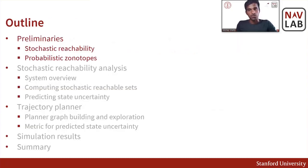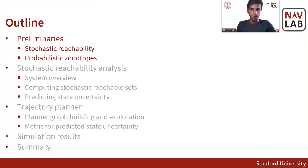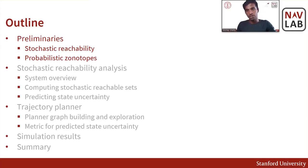Here is the outline for the rest of the talk. First, I'll provide a brief idea of stochastic reachability along with the set representations that we use. Then, I'll describe the stochastic reachability analysis that we use to predict the state uncertainty. Next, I'll present the details of the trajectory planner, including the metric we designed for comparing candidate trajectories. And finally, I'll be showing some of the trajectory planner results and then summarizing our work.